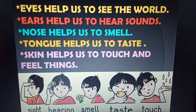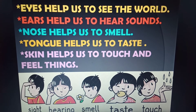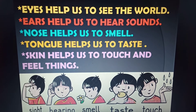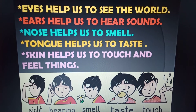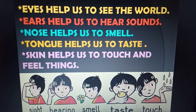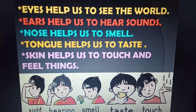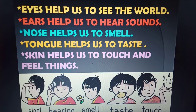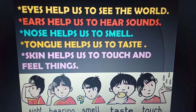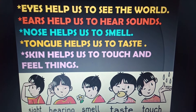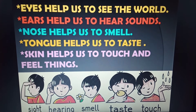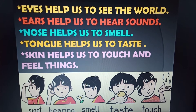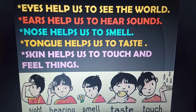Ears help us to hear. The second picture shows the function of the ears, i.e. hearing. Third, nose — nose helps us to smell. In the third picture we can see a child smelling the flower.